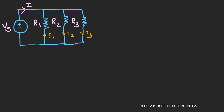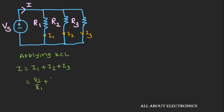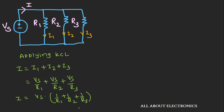I1, I2, and I3 are the currents flowing through resistors R1, R2, and R3 respectively. Now here we can apply Kirchhoff's current law. Applying KCL, we can write I = I1 + I2 + I3. Using Ohm's law, we can write I1 = Vs/R1, I2 = Vs/R2, and I3 = Vs/R3. So we can write I = Vs × (1/R1 + 1/R2 + 1/R3). Let's call this equation number 3.